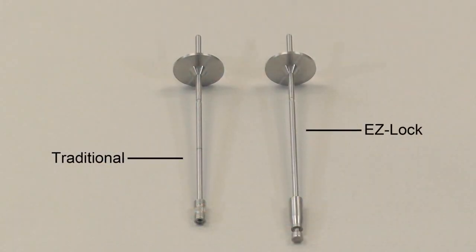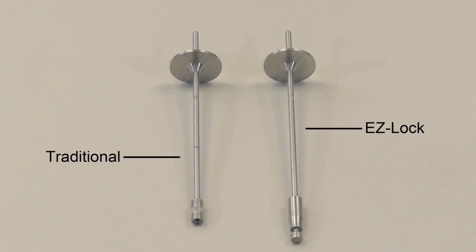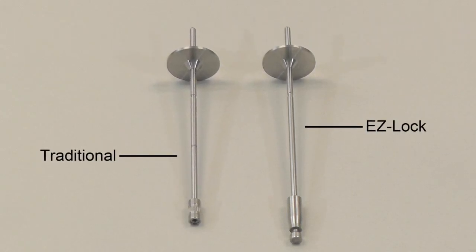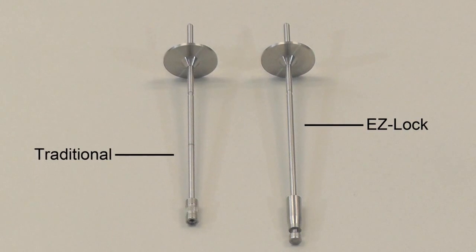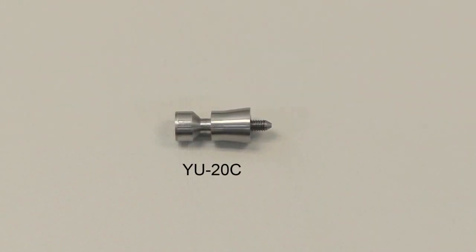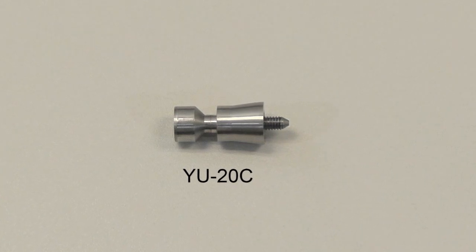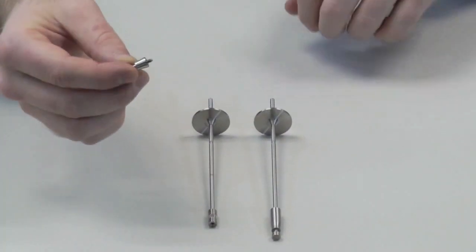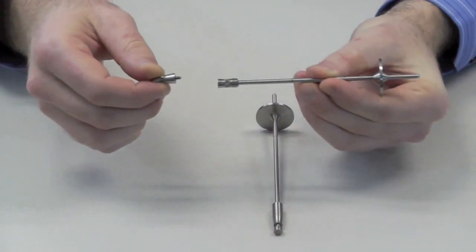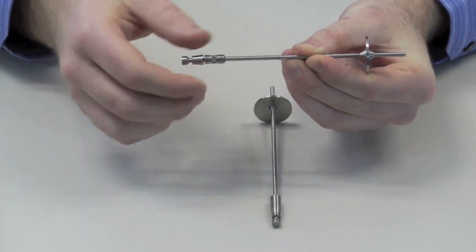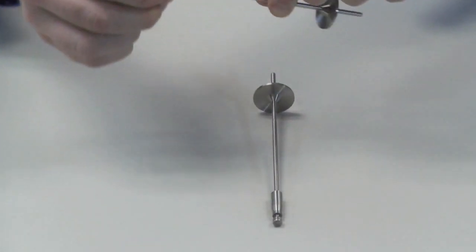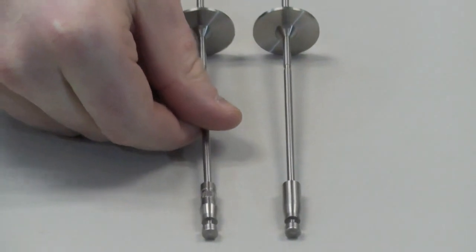Here we have a traditional disk spindle next to an EasyLock spindle. If you have your viscometer retrofitted, you can still use your traditional threaded spindles with the help of an EasyLock converter, Brookfield part number YU-20C. When this YU-20C coupling nut is threaded onto a standard spindle, the combined dimensions will mimic that of a native EasyLock spindle.